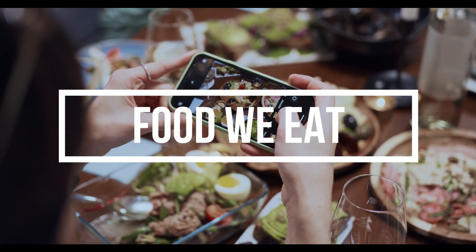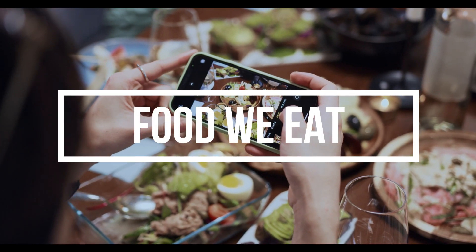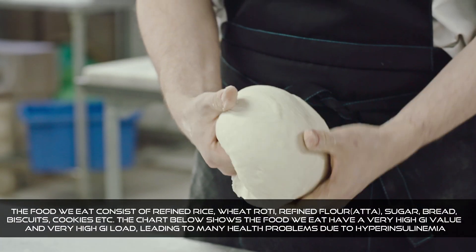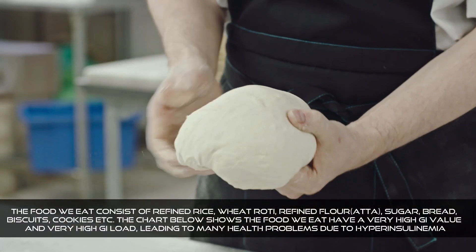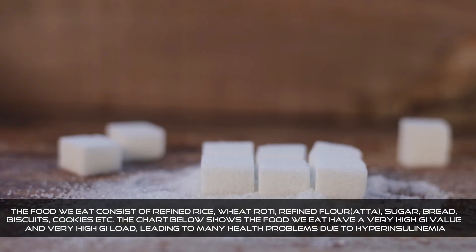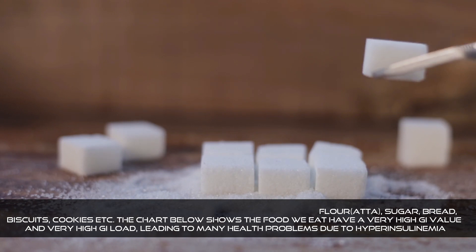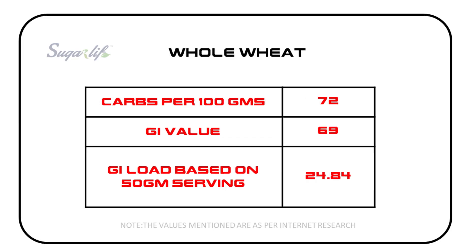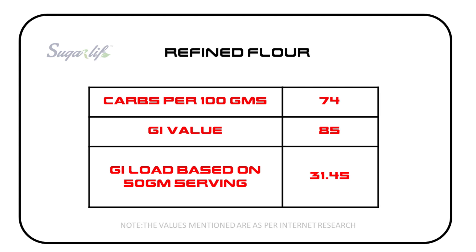Now let us talk about the food we eat. The food we eat consists of refined rice, wheat roti, refined flour atta, sugar, bread, biscuits, cookies, etc. The chart below shows that the food we eat has very high GI values and very high glycemic load, leading to many health problems due to hyperinsulinemia.